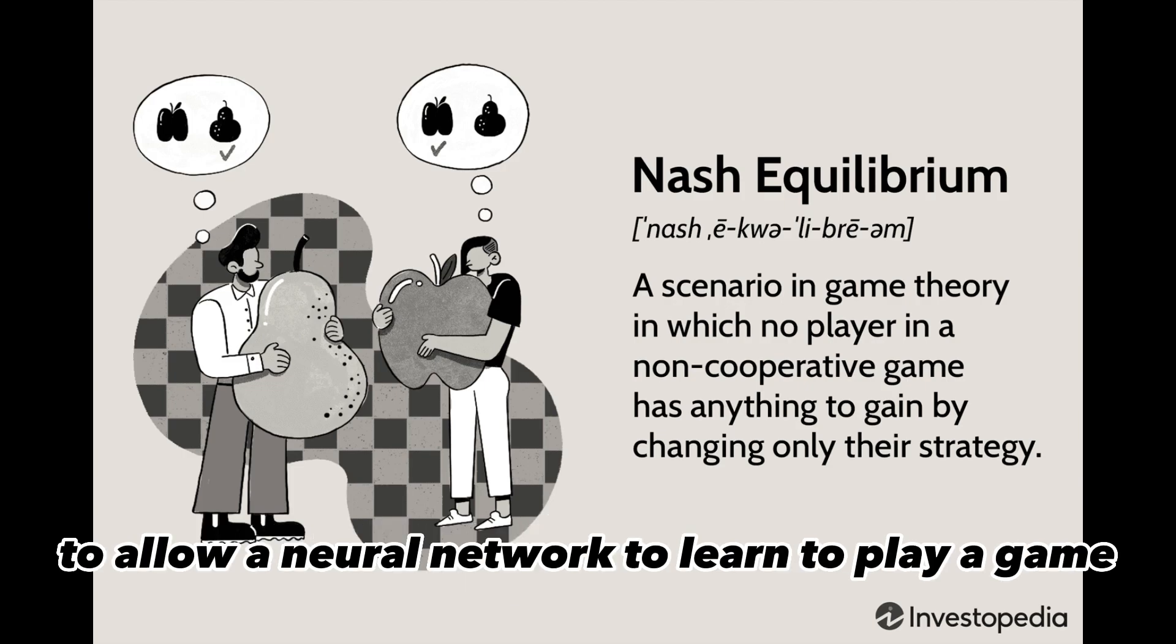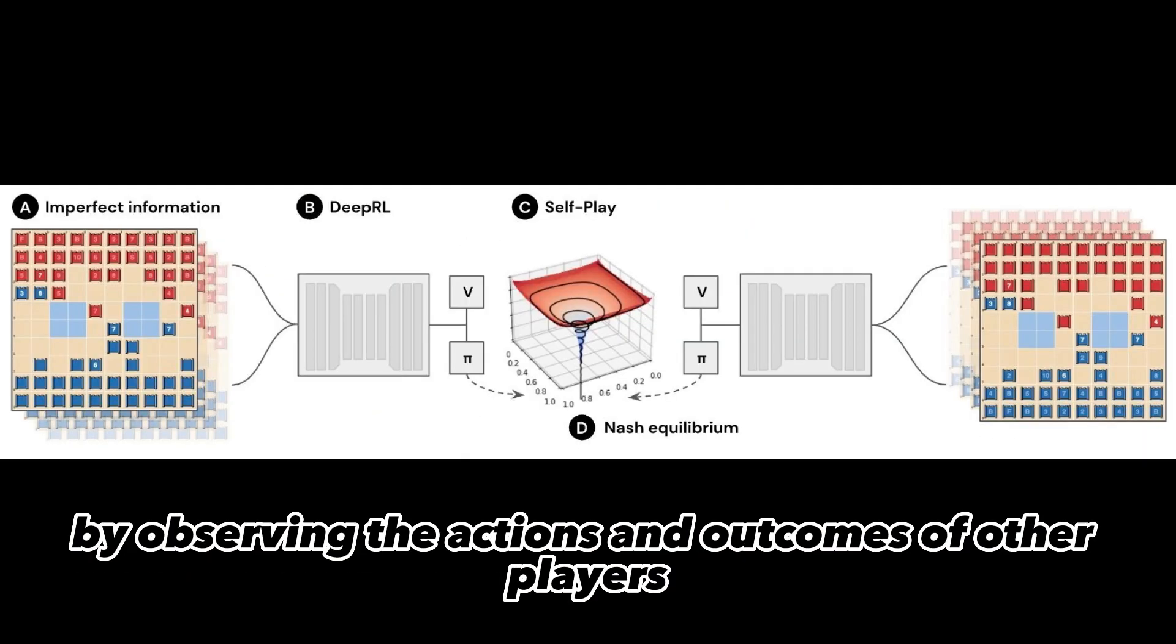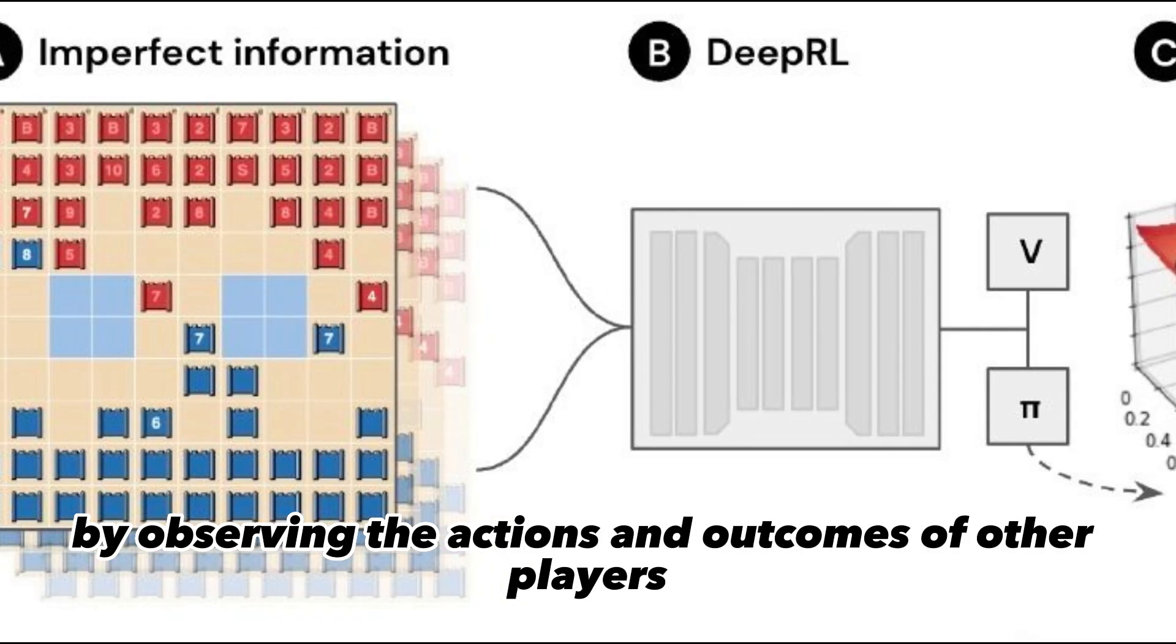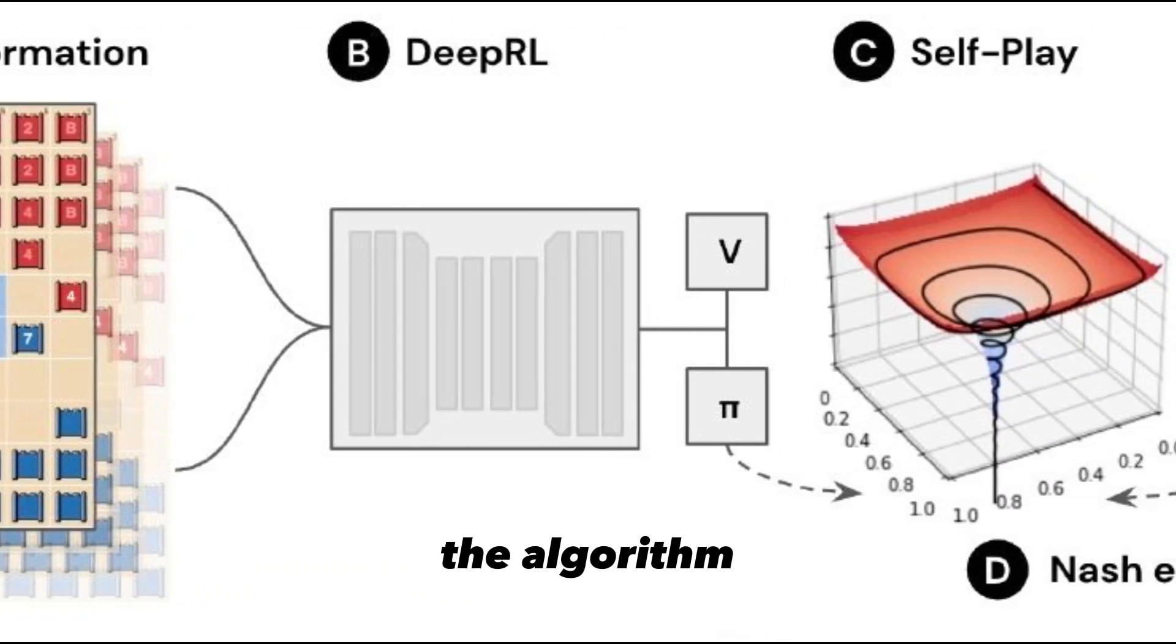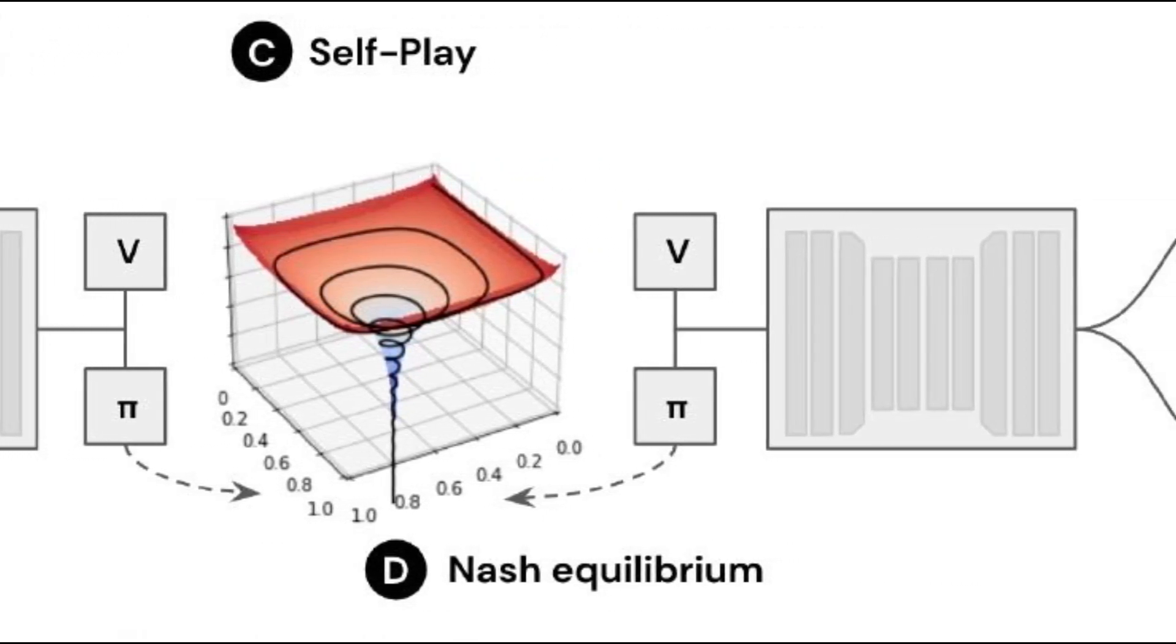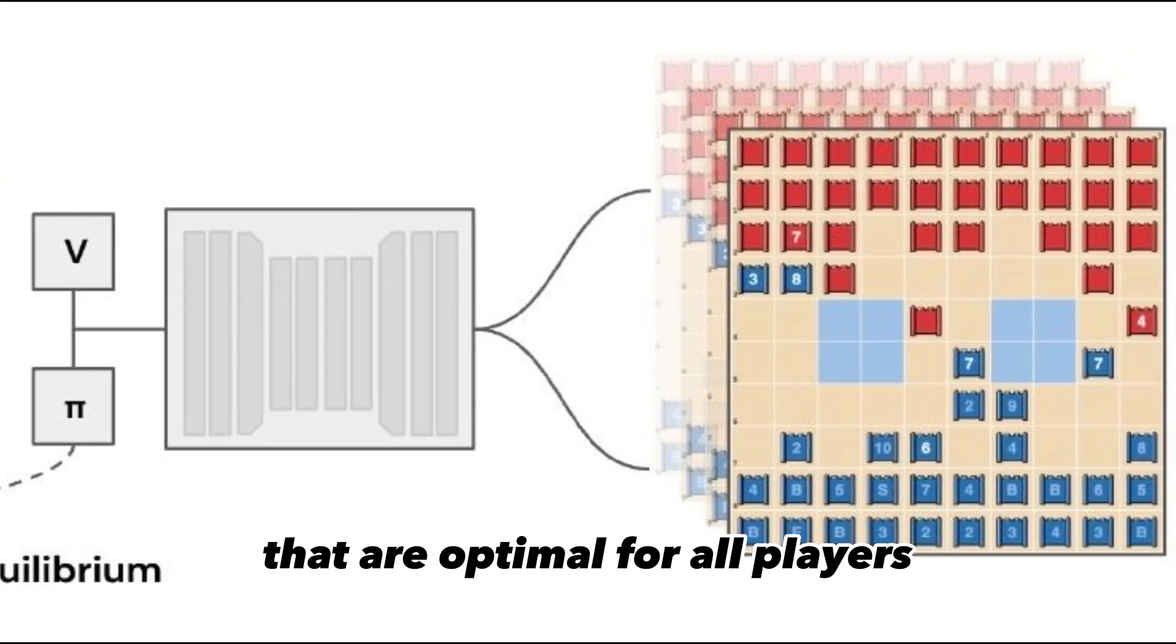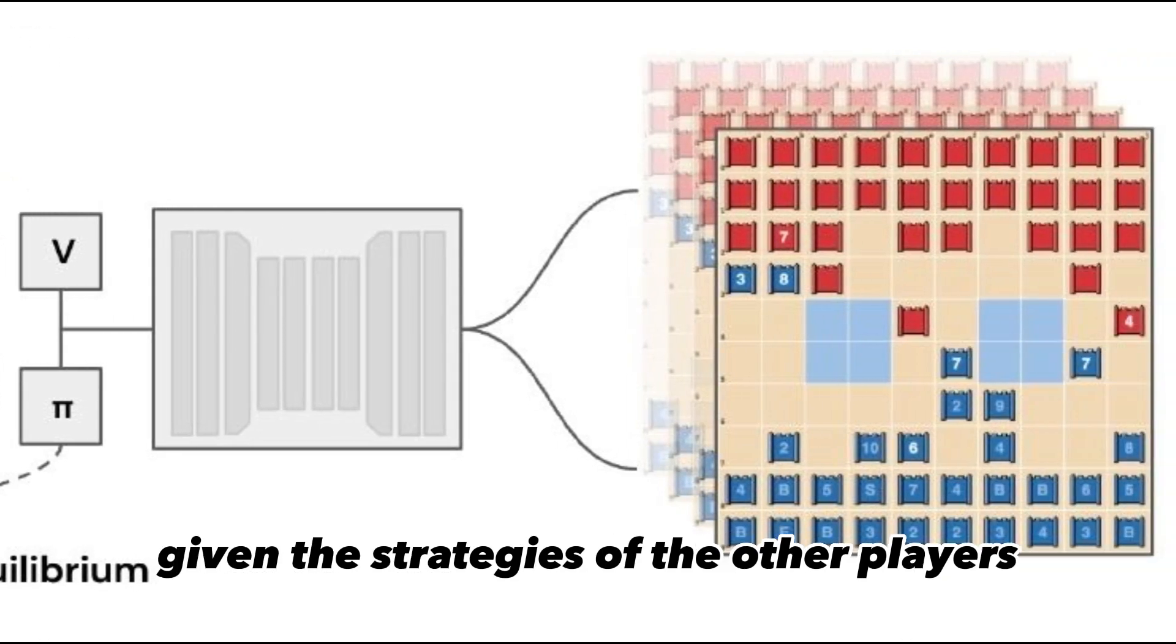The DeepNash algorithm uses deep learning techniques to allow a neural network to learn to play a game by observing the actions and outcomes of other players. The algorithm is designed to find the Nash Equilibrium of a game, which is the set of strategies that are optimal for all players given the strategies of the other players.